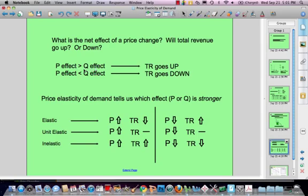So here's, in general, how we can see whether total revenue is going to go up or go down. If the price effect is greater than the quantity effect, then total revenue is going to go up. Intuitively, that makes sense. If I get a higher bump in price, then I lose in quantity, my total revenue is going to go up. On the other hand, if my price effect is less than my quantity effect, total revenue is going to go down.